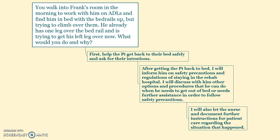Scenario two: You walk into Frank's room and find him in bed with the bedrails up, trying to climb over them — he already has one leg over. First, help the patient get back to bed safely and ask for his intentions. After that, inform him of safety precautions and regulations of the rehab hospital, discuss other options and procedures for when he needs to get out of bed, and notify the nurse and document the incident for patient care.